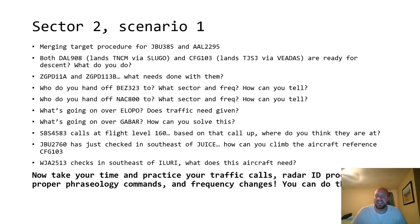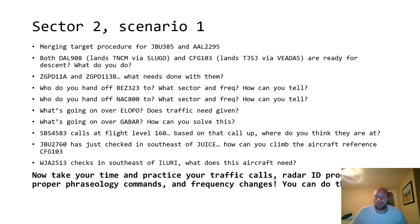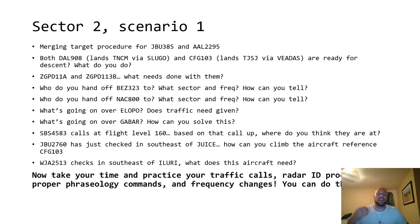JetBlue 2760 just checked in southeast of Juice, hawking climbing aircraft reference Condor 103. Condor wants to get down and JetBlue wants to get up — JetBlue's climb and Condor's descent are in conflict. We're going to want to use positive separation here. And WestJet 2513 checks in southeast of Hillary — what does this aircraft need? It's probably going to need traffic before you terminate, the JetBlue. So it'd be nice to hold on to everybody, let everybody know, and don't put the merging target procedure on Piarco Center's airspace or workforce.